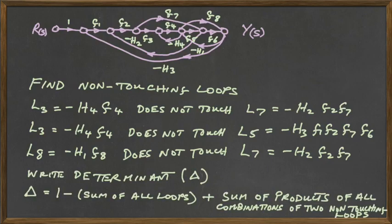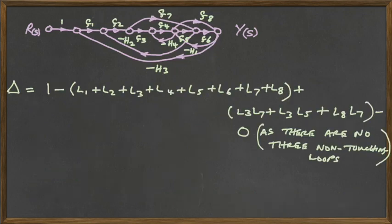The next procedure is to write the determinant. Now, the determinant of the graph is always one minus the sum of all loops plus the sum of the products of all combinations of the two non-touching loops that you can find in your graph.